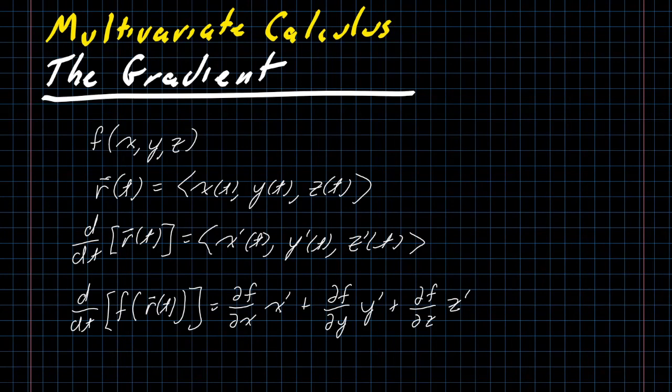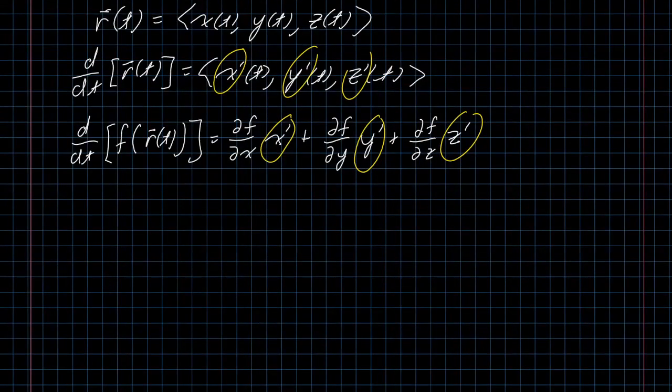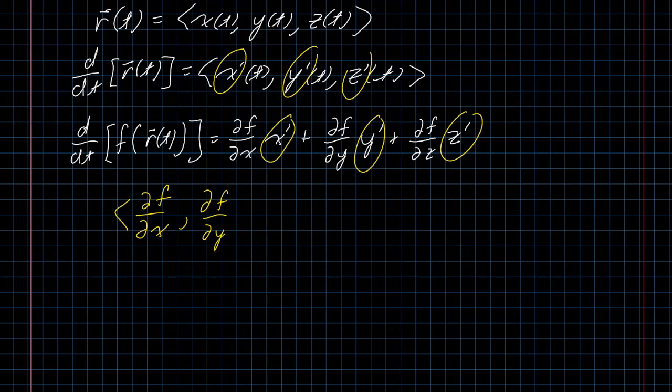And seeing all of this lined up like this, maybe you notice, I'm multiplying things times the components of this vector r prime, and I'm putting them in order added together. That's exactly what happens if we take a vector, the vector which has components partial of f with respect to x, partial of f with respect to y, and partial of f with respect to z, and we dot it with the vector that is x prime, y prime, z prime.